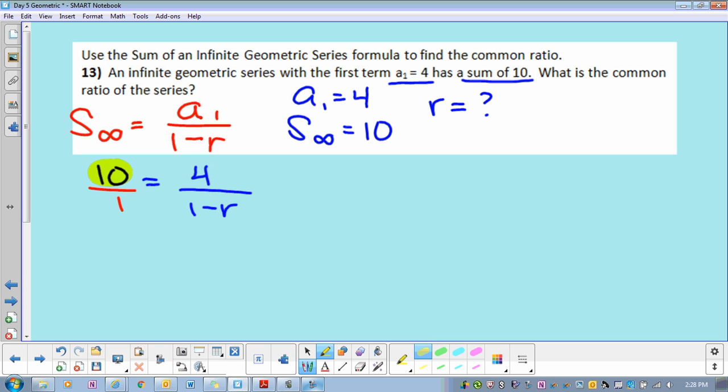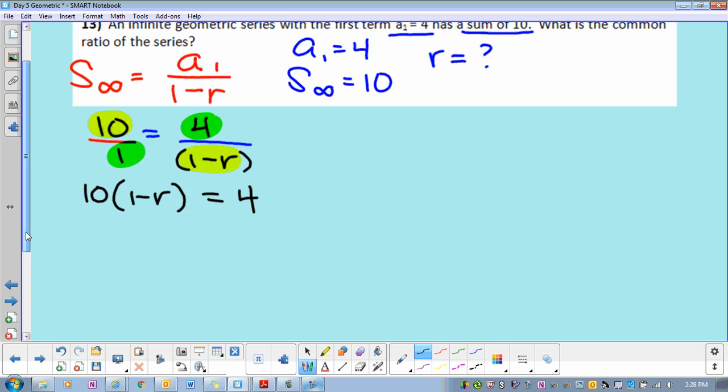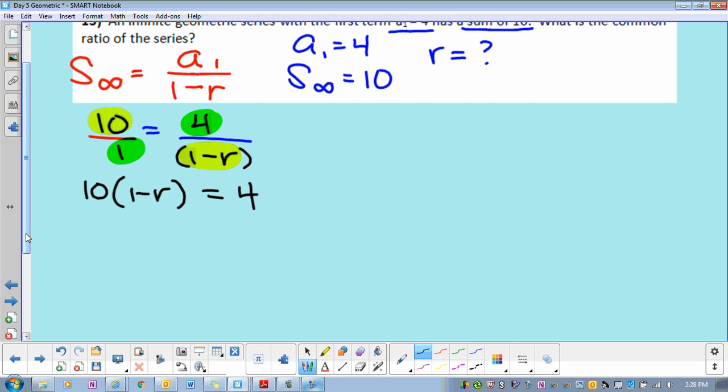So you have 10 times 1 minus r. And remember, that's in parentheses, which is more than one term. So 10 times 1 minus r equals, let's multiply the other side, 4 times 1, which is what? So you can solve for r, you have to distribute. So negative 10r, so 10 minus 10r equals 4. So negative 10r equals negative 6.